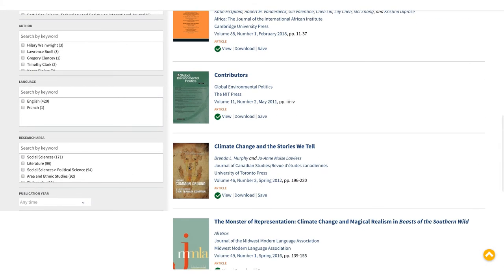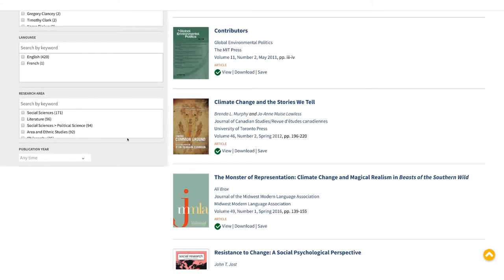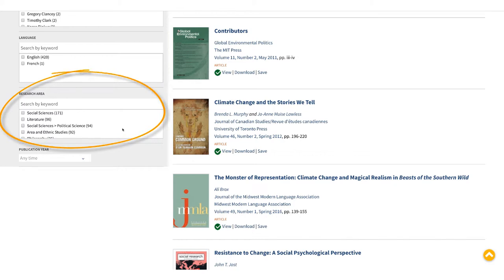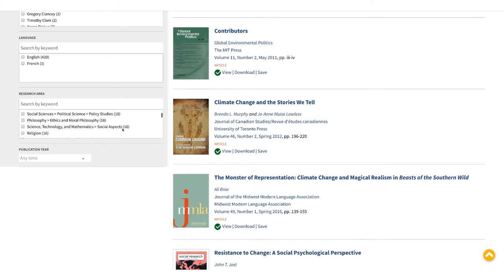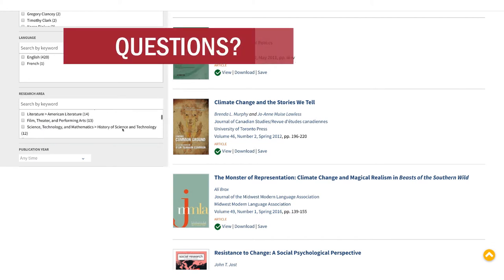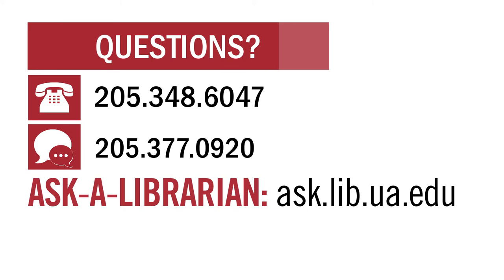You can play with changing which terms you do title searches for to see what returns the most relevant results. And remember, you have your research area limiters as well — select a research area limiter or scroll the list to further explore your topic. That's all for now. Thanks for watching. For more information on using Project Muse, check out our other videos: Basic Searching in Project Muse and Using the My Muse Library on our YouTube page. If you have any questions, you can call us at 205-348-6047, text us at 205-377-0920, or visit ask.lib.ua.edu to ask a librarian.